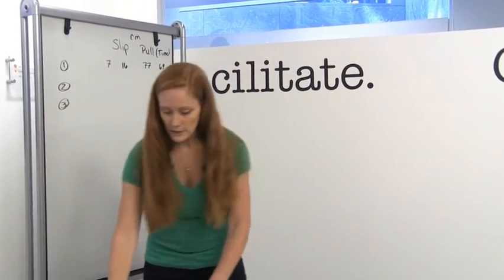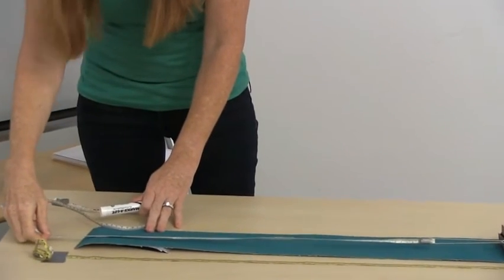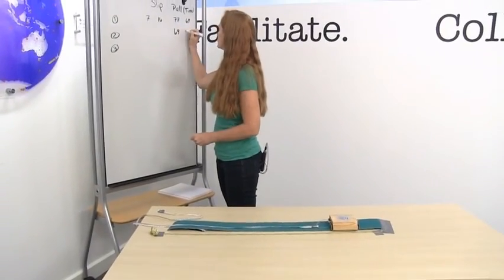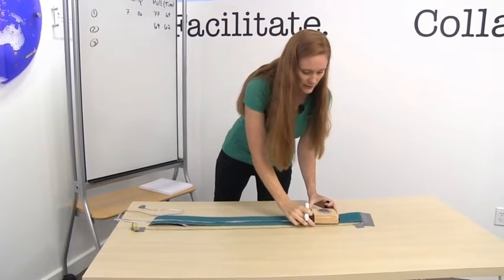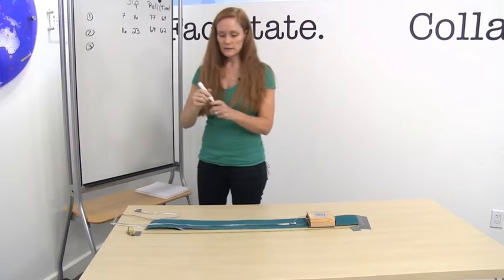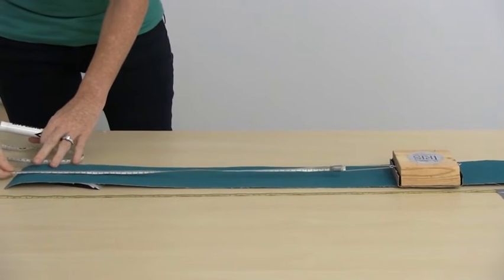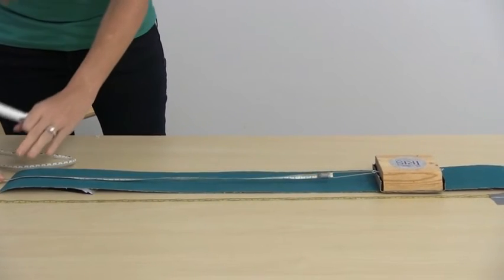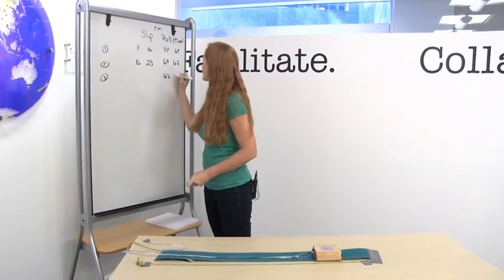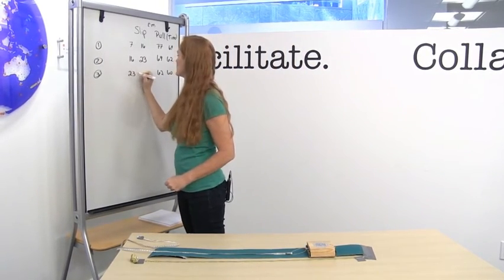Now I'll do it again. Starting at 69, I pull — that was a smaller one. That moved to 62, so from 69 to 62. And the leading edge of the block slid to 23 — so it was at 16 and slid to 23. Now I'm going to pull again to 69. That was a small one — totally counts. That went from 62 to 60, and the block slid to 25 — so from 23 to 25.